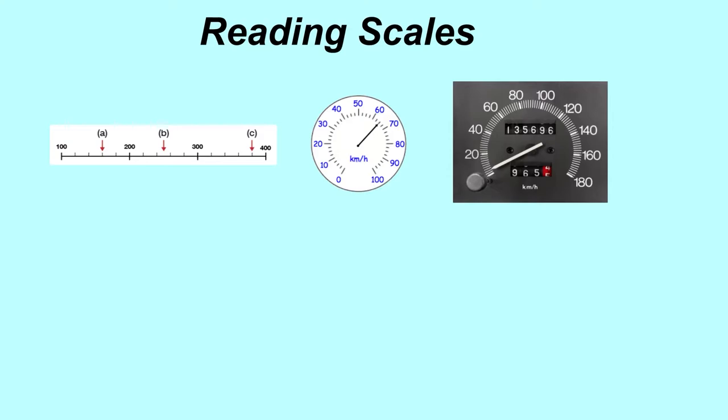We've got 100 up to 200. What you're looking to do is establish how many jumps, how many intervals are there between 100 and 200. So it goes one, two, three, four, five.